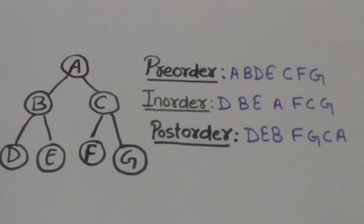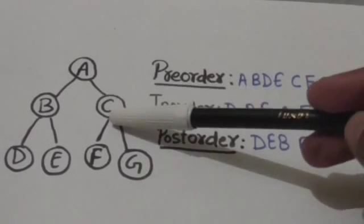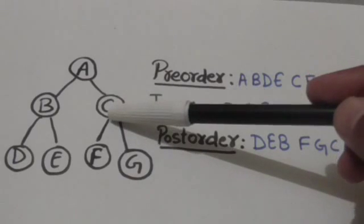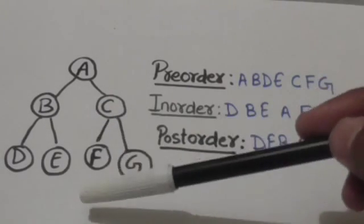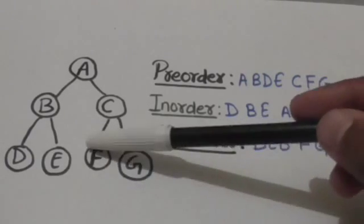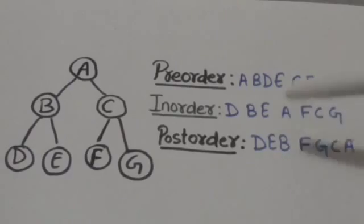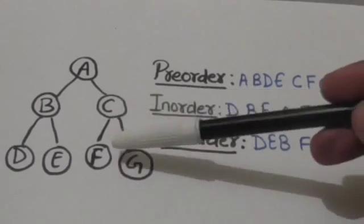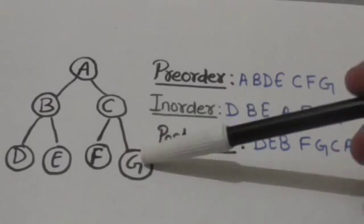After this, the right subtree of root A will be traversed in pre-order. Node C is the root of the right subtree of node A, so node C will be processed. Left subtree of node C contains only one node, that is node F, so node F will be processed. After this, the right subtree of node C will be traversed in pre-order. Right subtree of node C contains only one node, that is node G, so node G will be processed.